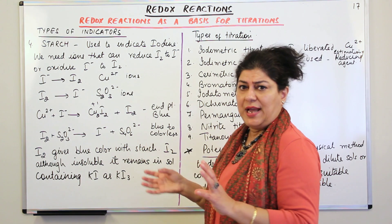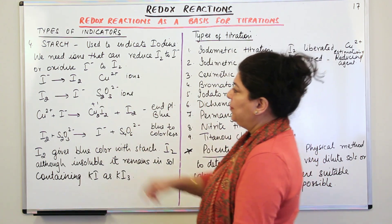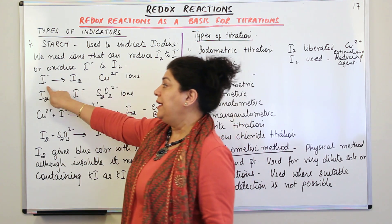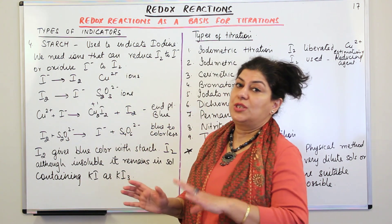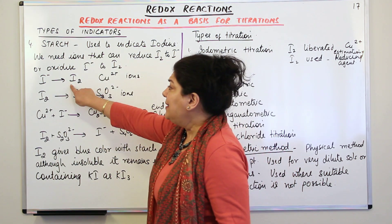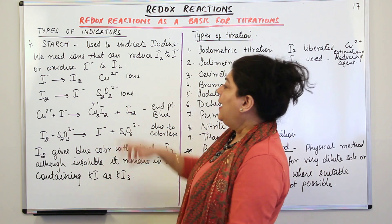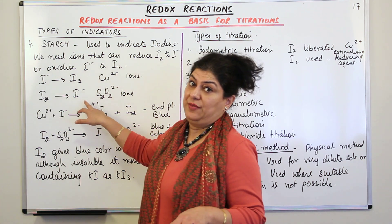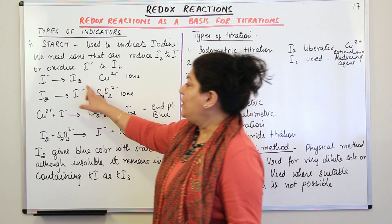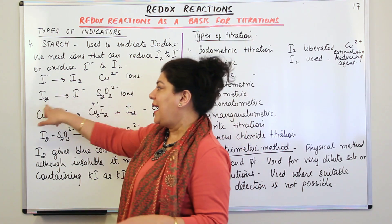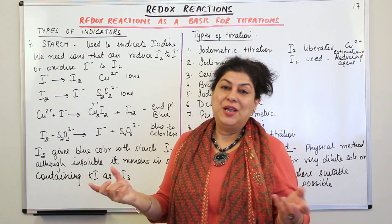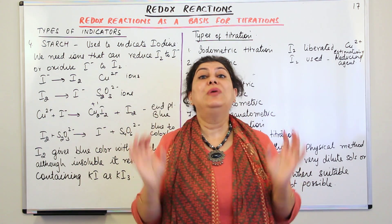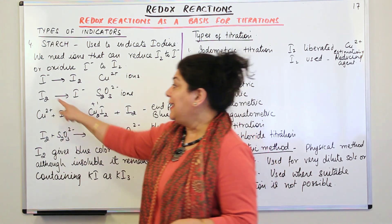Let us understand what the reactions are and how starch acts as an indicator. When I⁻ turns into I2, copper ions have the ability to oxidize iodide ions into iodine — so when this happens, blue color will appear. And when you have thiosulfate ions, thiosulfate ions can turn I2 into I⁻, meaning it can reduce iodine. As soon as I⁻ is formed, the blue color that was present due to I2 disappears.